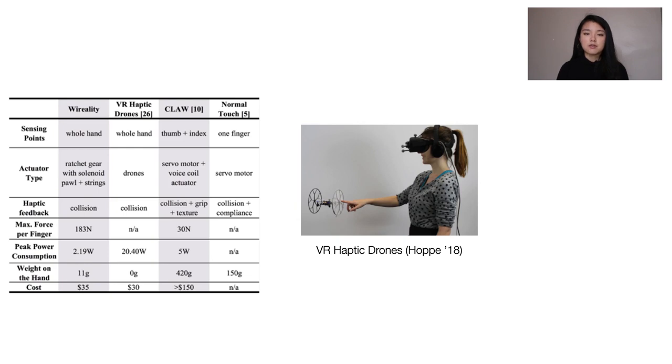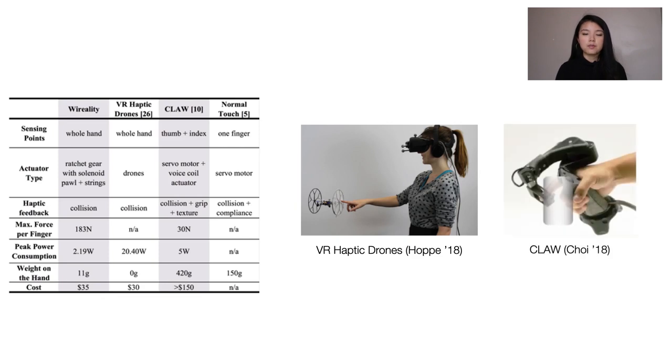Another system that provides collision feedback is the Claw, which uses servomotor and voice coil actuator. While it can simulate grip and texture, the weight of the system is equal to 40 Virality modules. Virality's use of a ratchet gear as the locking mechanism is also unique among these devices. Details of the table can be found in our paper.